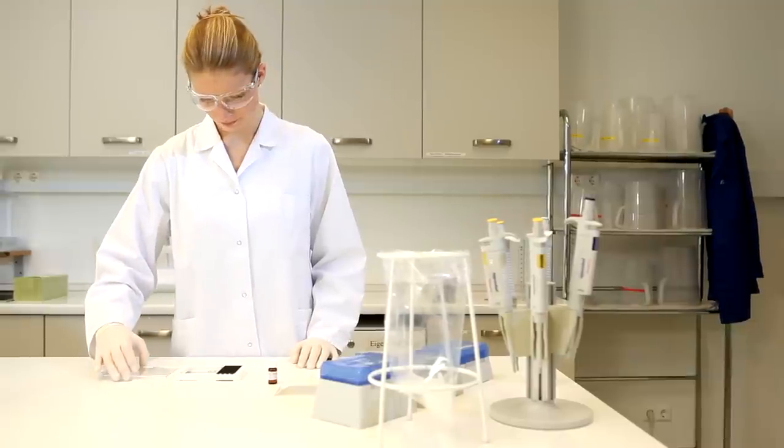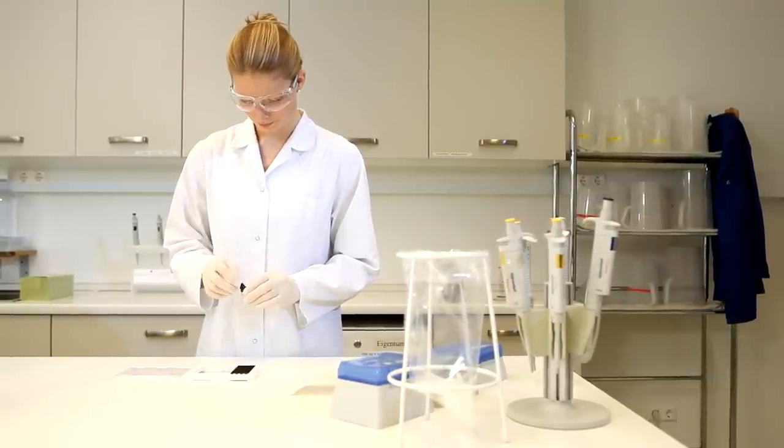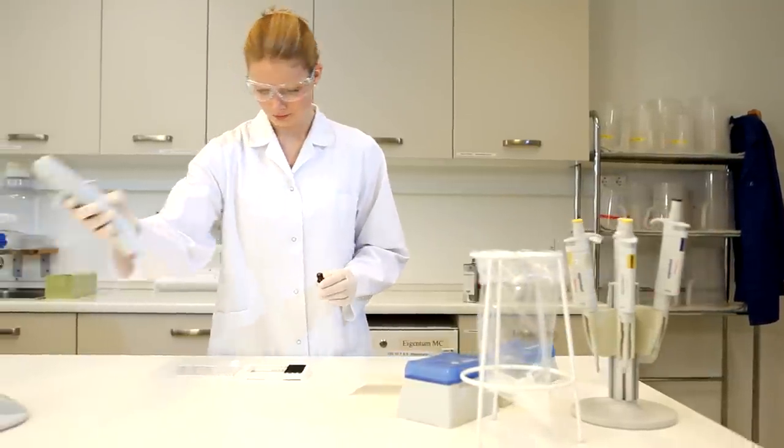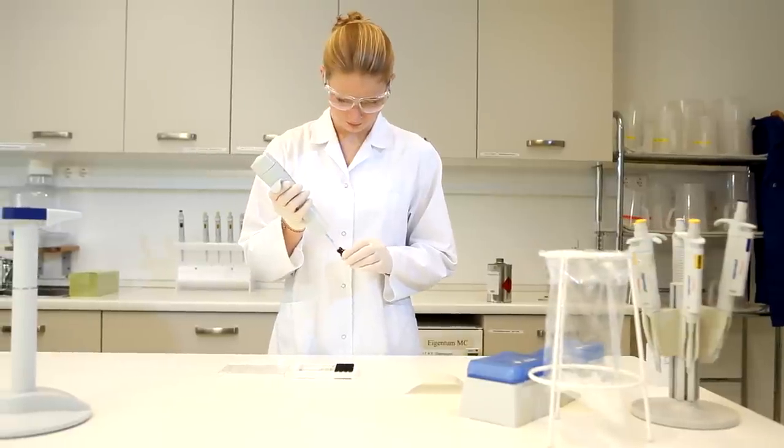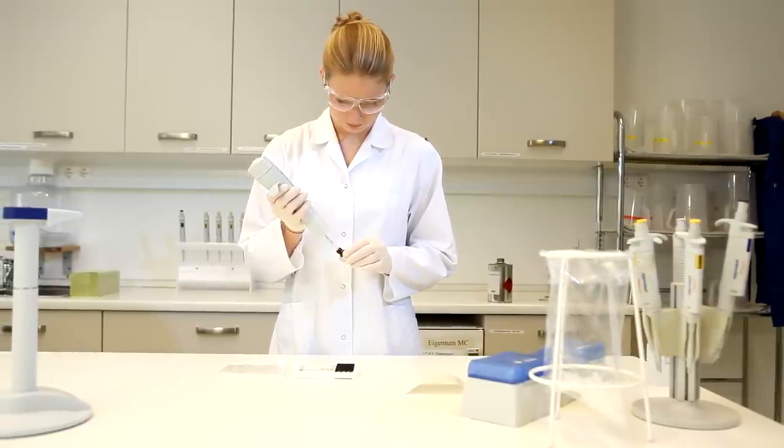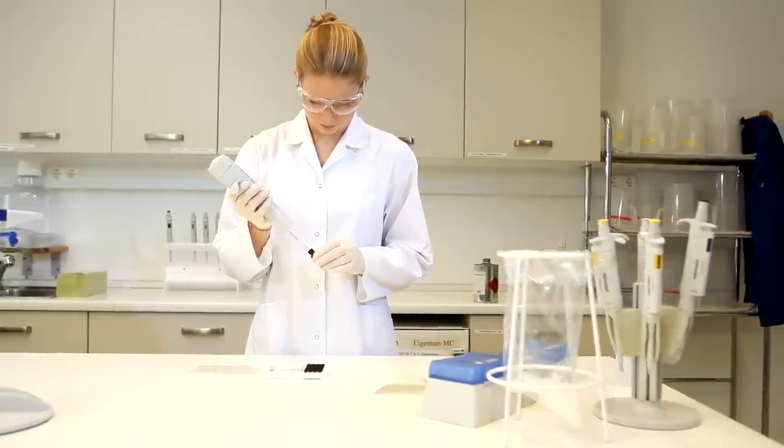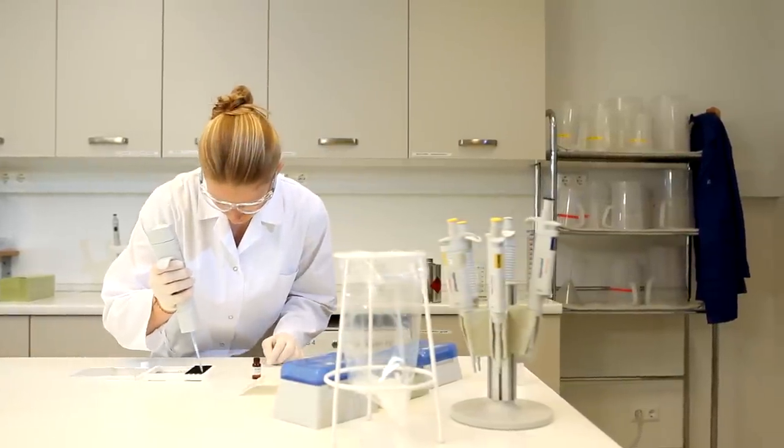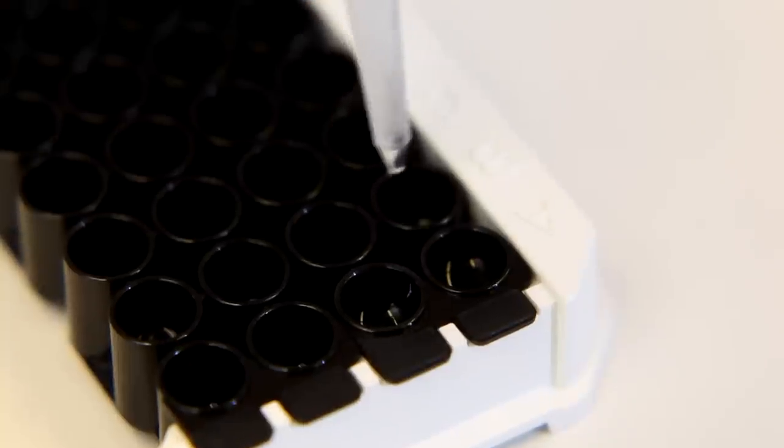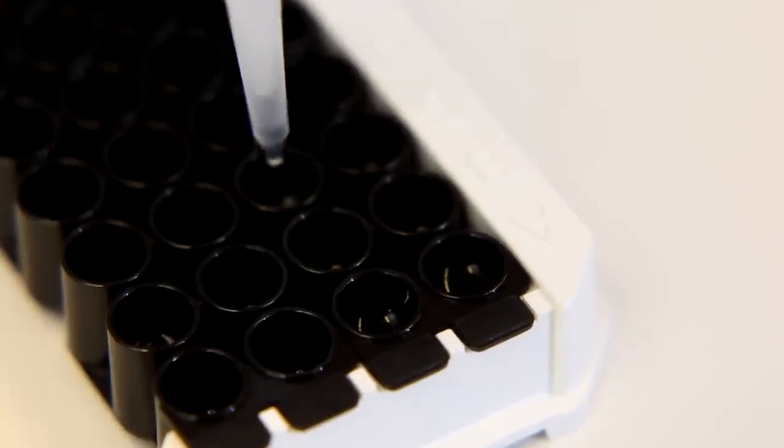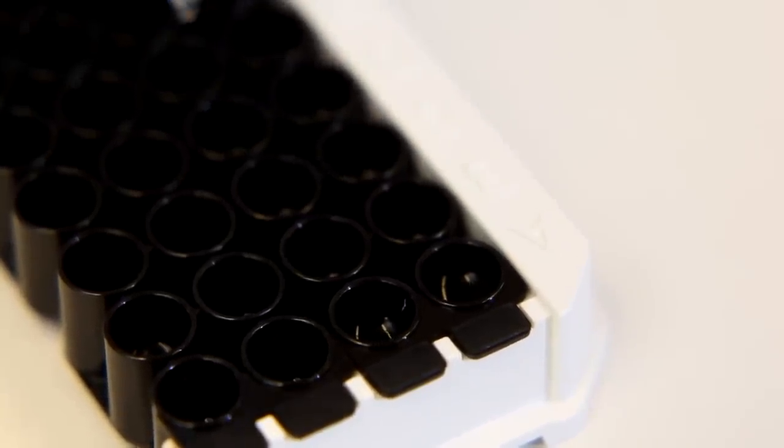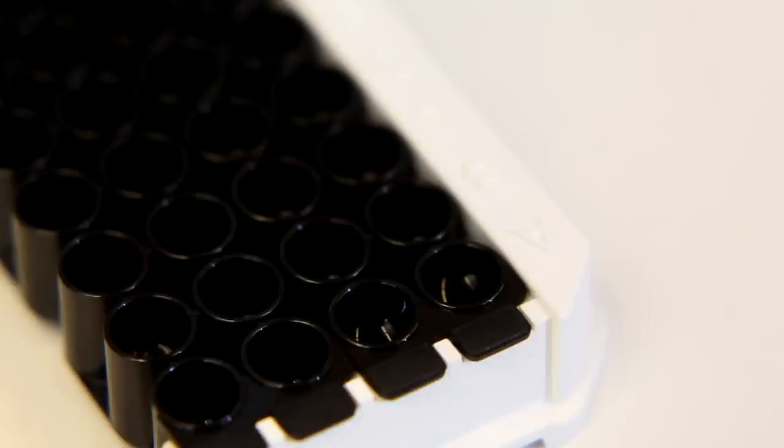Now it's time to start the endotoxin binding in the wells. This process cannot begin until the binding buffer is added. Add 20 microliters of binding buffer to each well. It is important to pipette carefully to avoid cross-contamination. As soon as the binding buffer is added, the phage protein coating on the well surface is activated and the binding of endotoxin in the sample begins.